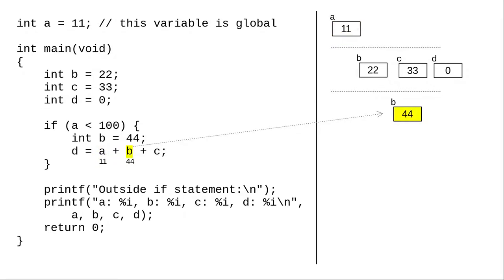B is found immediately in the current scope with value 44. Variable C isn't in the current scope. We look up one level and find it with value 33.